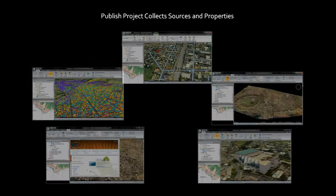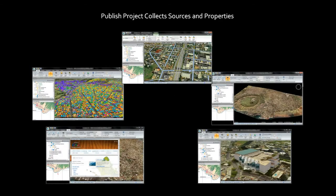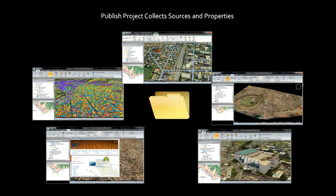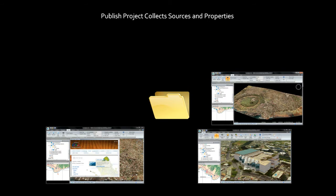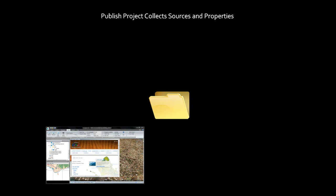In this video we will show how to use the publishing tools in TerraExplorer Pro. The publish kit process collects all the sources and layer properties that are used in a project and stores them in a target directory. This sample project will create a final kit which includes feature data for buildings and roads, an image raster, example 3D models, and external content from the web.